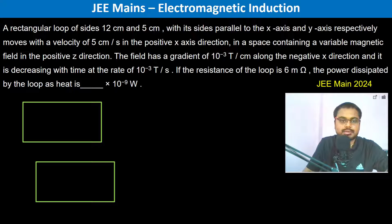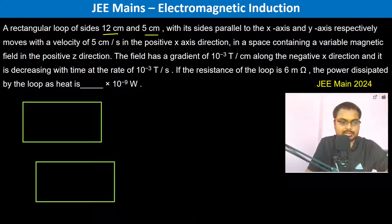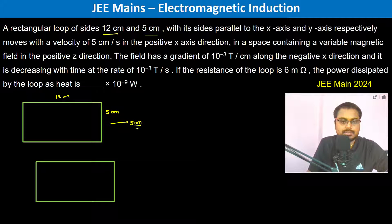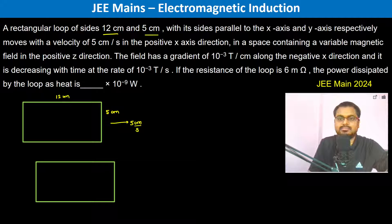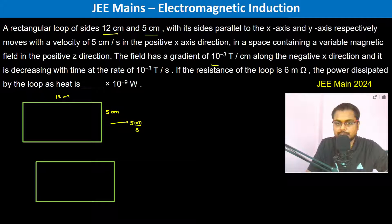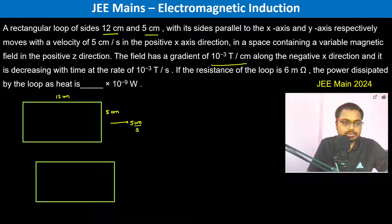A rectangular loop of 12 centimeter and 5 centimeter with sides parallel to the x-axis and y-axis — this is 12 centimeter, this is 5 centimeter — moves with a velocity of 5 centimeter per second in the x-axis direction, in a space containing a variable magnetic field in the positive Z direction. The field has a gradient of 10 to the power minus 3 tesla per centimeter along the negative x direction.